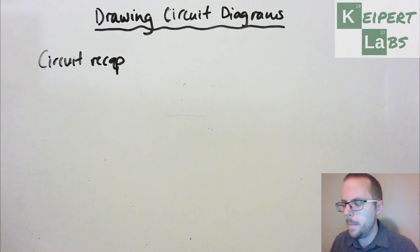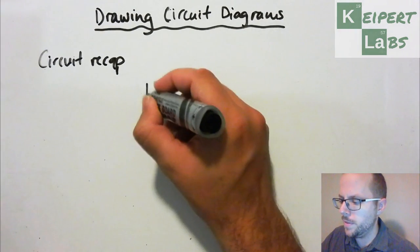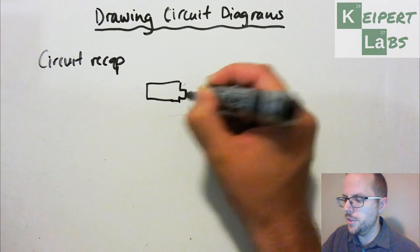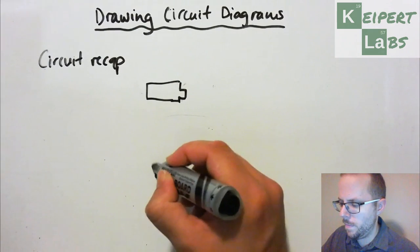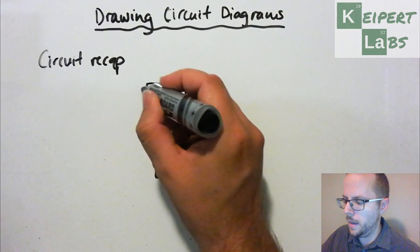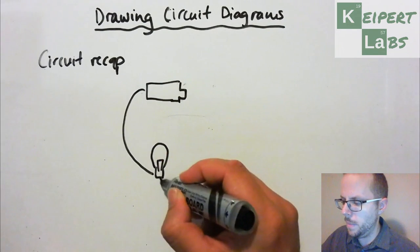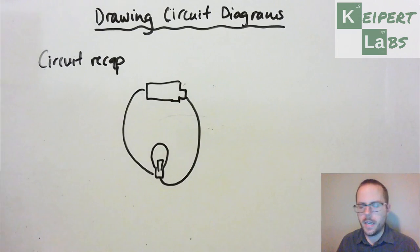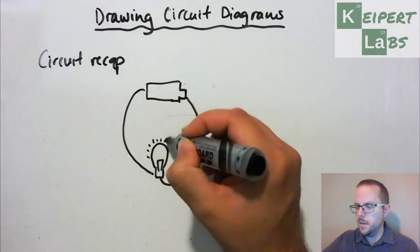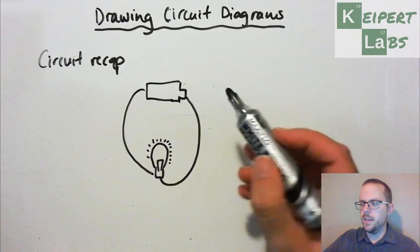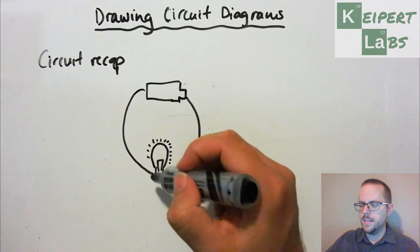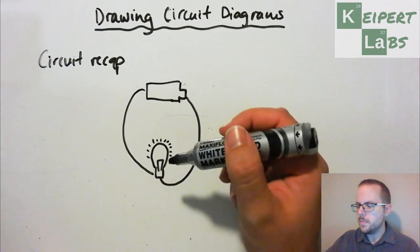So remember that in the previous video, in our introduction to electricity, we introduced a really simple circuit. We had a light bulb, and we had a battery, and we had some wires. And so the battery provides a source of electrical energy, electricity that can flow through the wires to our light bulb, and so the light can turn on.